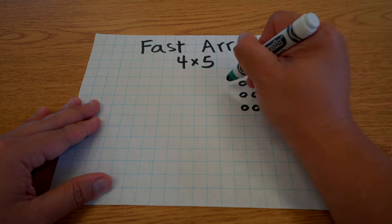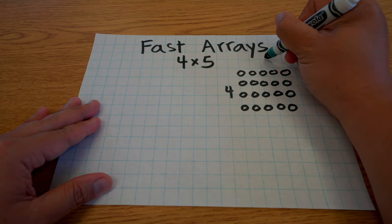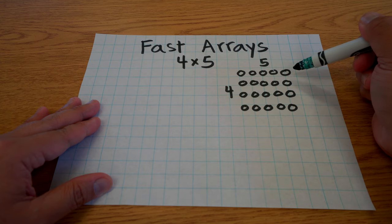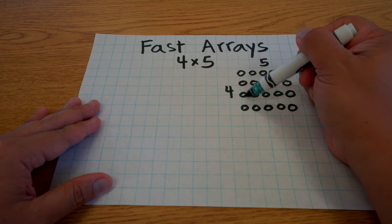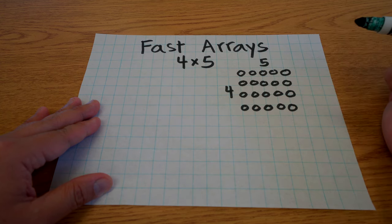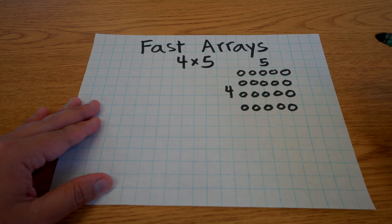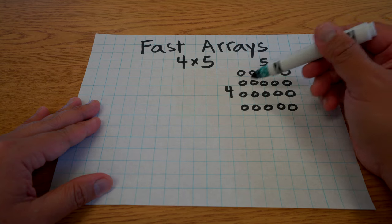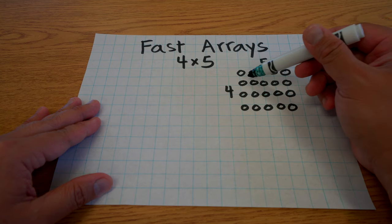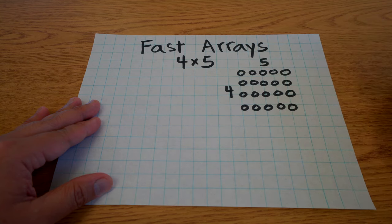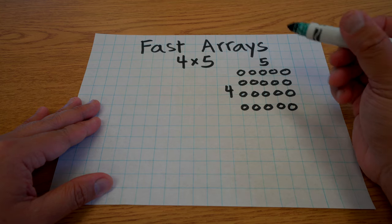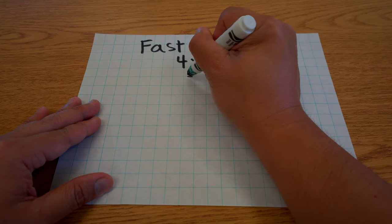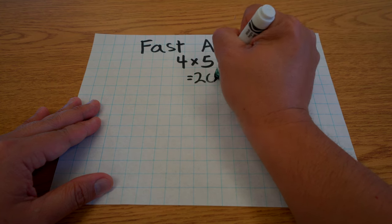And I could label it four by five because I have five and four. Now, you understand that I can multiply the two numbers together to find out how many total circles I have. So four times five is 20. So maybe I'll write that here. Four times five equals 20.